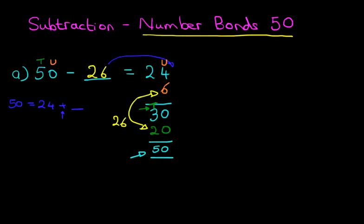Now with a bit of practice, you won't need to do any of these workings out over here. You'll simply go from the question 24, you'll add 6 to make it 30, and then you'll add 20 to make it 50.